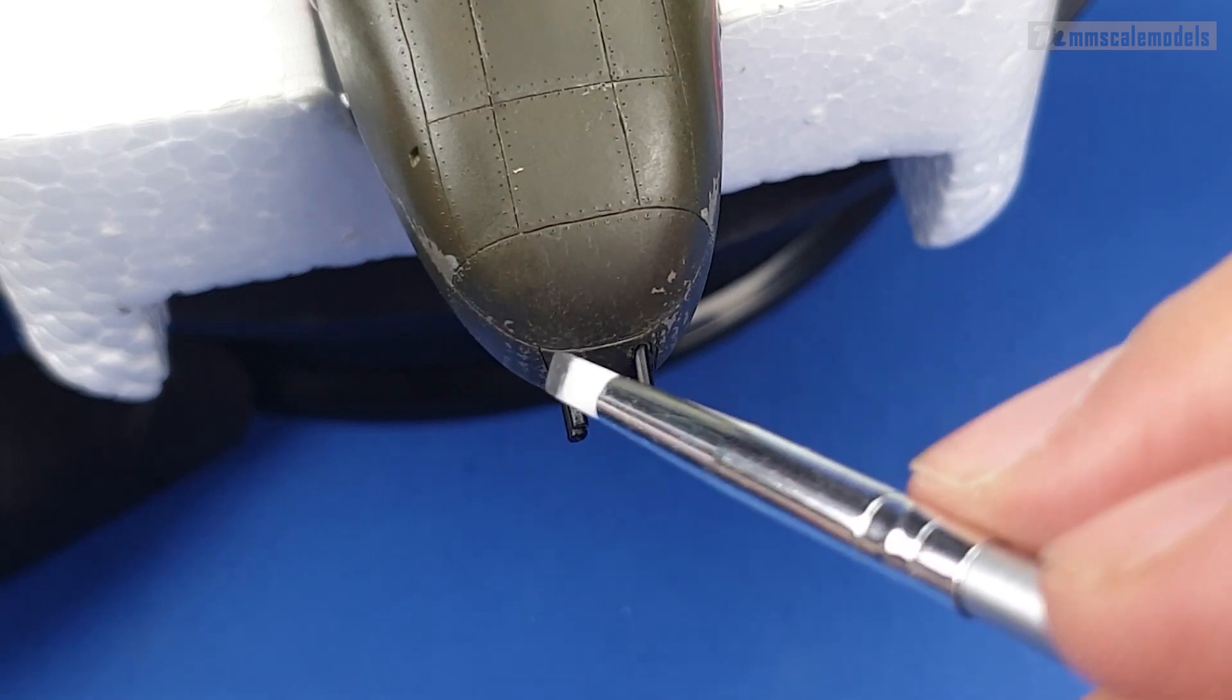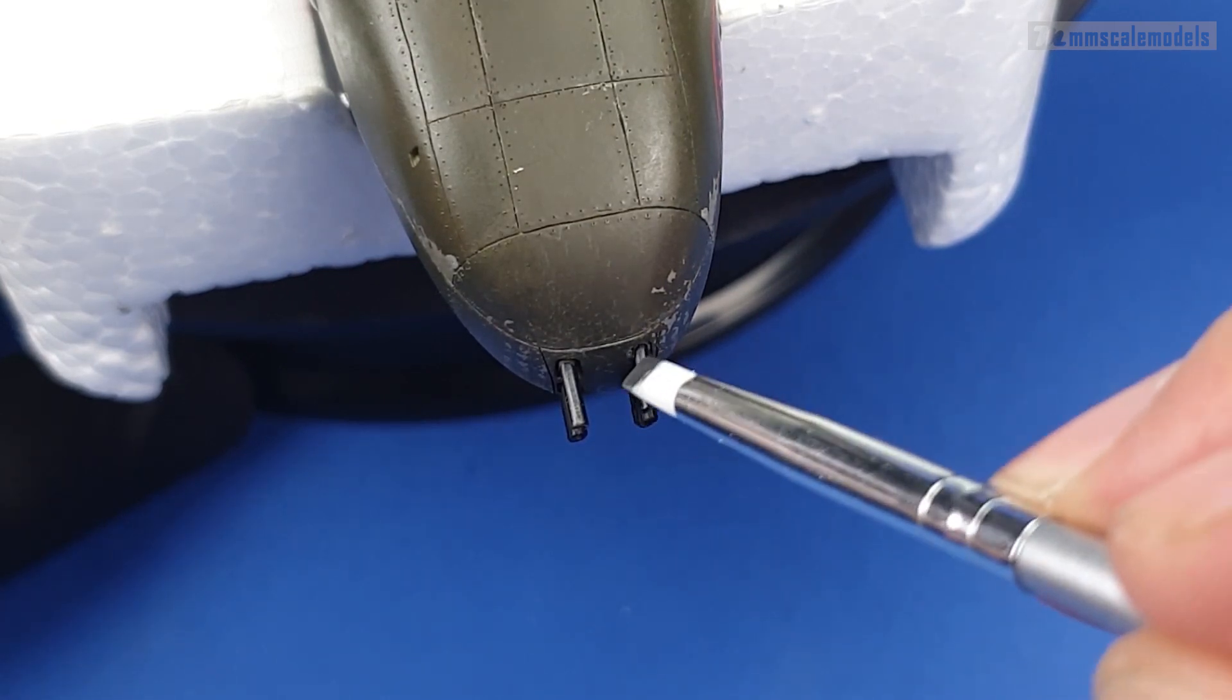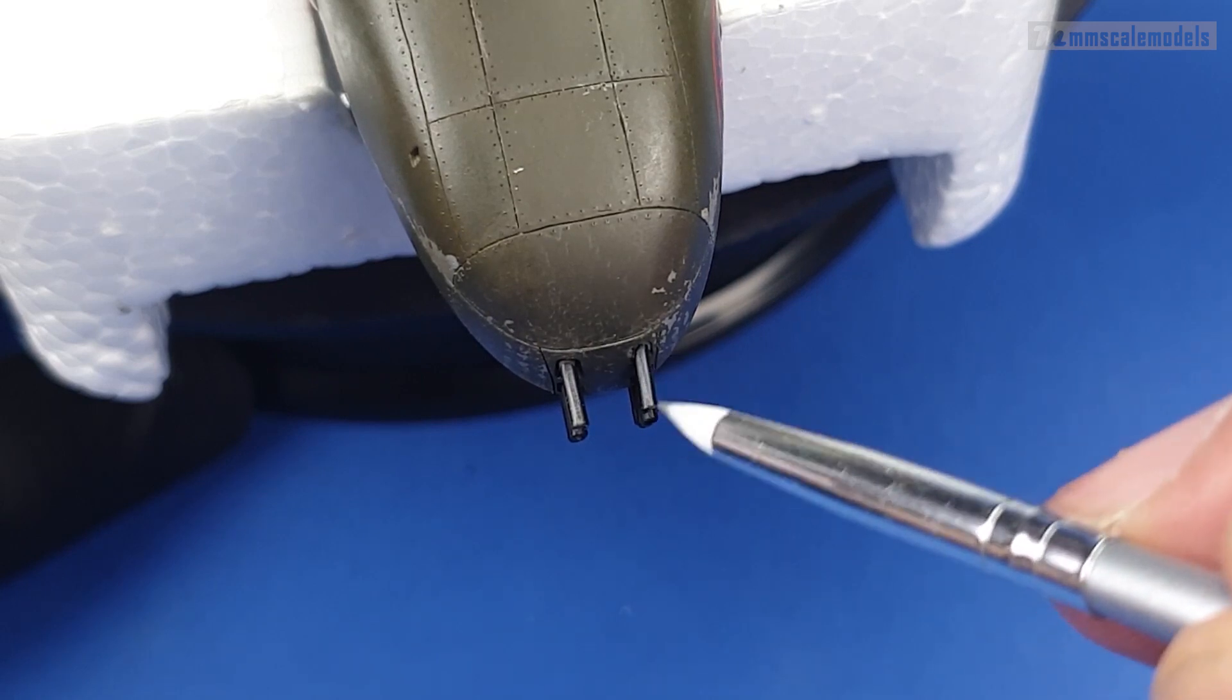The more powder you rub in and polish, the shinier the part will get. This way you can control the strength of the effect.